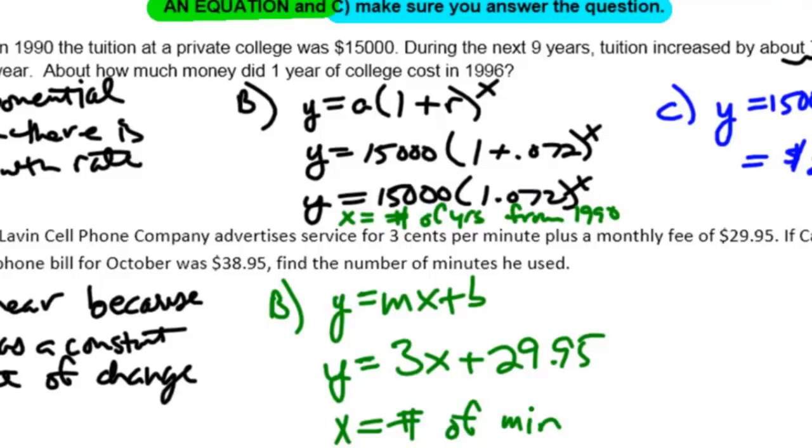Let's answer the last piece, Part C. We're told Cameron's bill was 38.95. Now we just need to solve our 2 step equation. This one is going to require a little bit of review work. Subtracting my flat rate over, that's going to get me 9. Oh, I have a mistake.